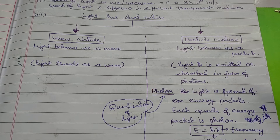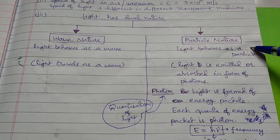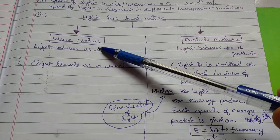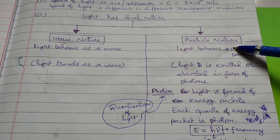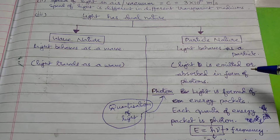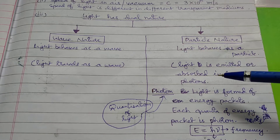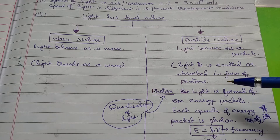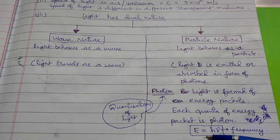The third point is that light has a dual nature — it has two natures. One is wave nature, meaning light propagates in the form of a wave. The other is particle nature, meaning light is composed of small energy packets called photons. Light is composed of a large number of photons, and the energy of each photon is represented as E = hν, where E is energy, h is Planck's constant, and ν (nu) is frequency.